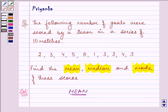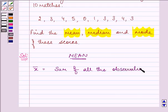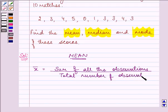Mean or average of a number of observations is sum of all the observations divided by the total number of observations.